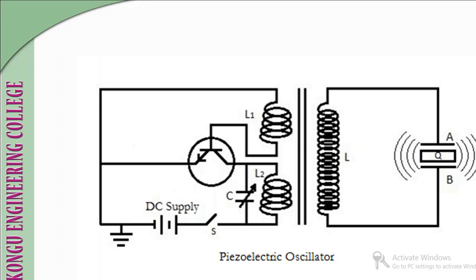This is the principle of production of ultrasonic waves. We have a piezoelectric crystal placed between two metal plates A and B, and three coils L1, L2, and L which are inductively coupled.